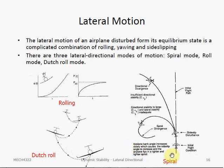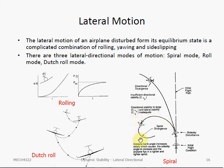The spiral mode is a slow mode, meaning it occurs very slowly. The motion is initiated by a displacement in roll angle which then would slowly increase the sideslip angle and it appears as a descending turn.